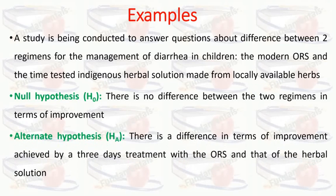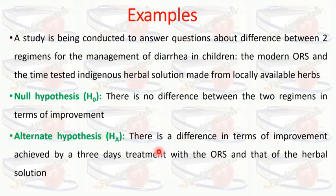The alternate hypothesis will be that there is a difference in terms of improvement achieved by a three-day treatment with the ORS and that of the herbal solution. With the null hypothesis we are nullifying, and the alternate hypothesis states that there is a difference in terms of improvement.